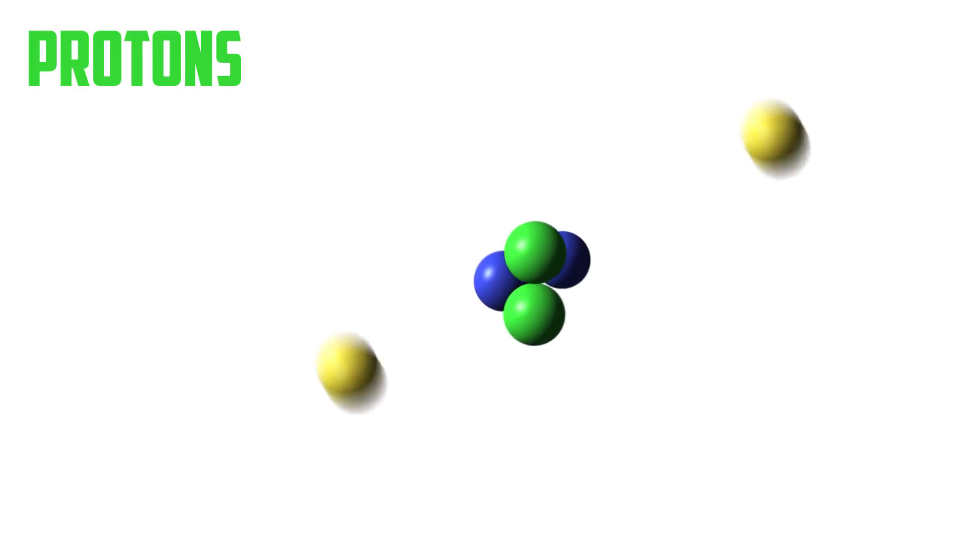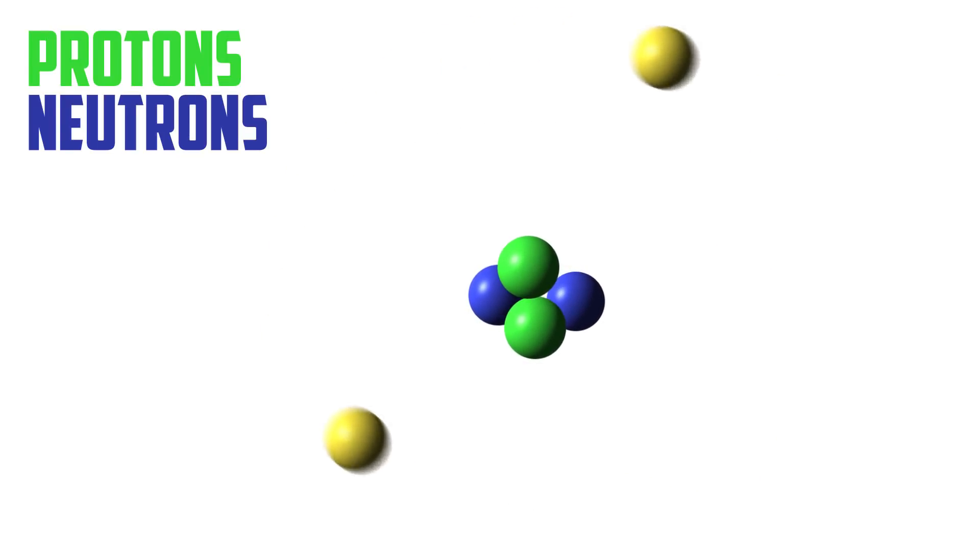To understand how electricity works, let's start with the most basic parts. Everything, all matter, is made up of atoms. Atoms are made of particles — protons and neutrons in the core, which are surrounded by electrons. Electrons? That sounds familiar. Electronics? Electricity? I bet that means electrons are important.